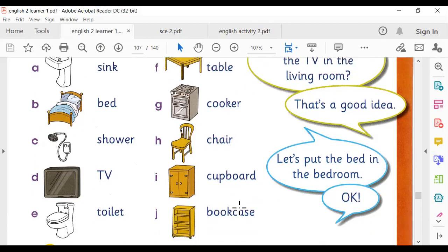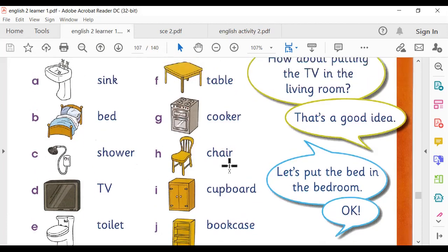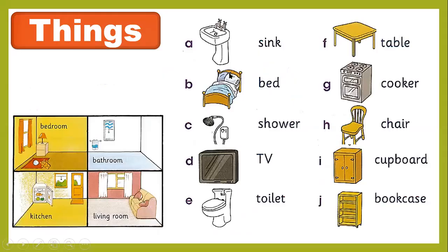Here is the short track for practice. The sink should be in the bathroom, the bed in the bedroom, the shower in the bathroom, the TV in the living room, the toilet in the bathroom, the table in the kitchen or bedroom, and the cooker in the kitchen. The chair can go in the kitchen, bedroom, or living room — you have to decide.